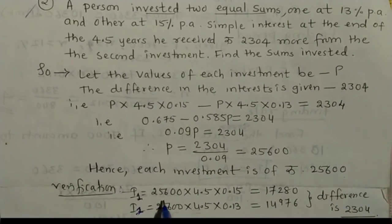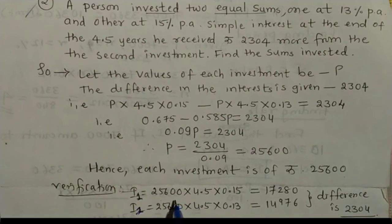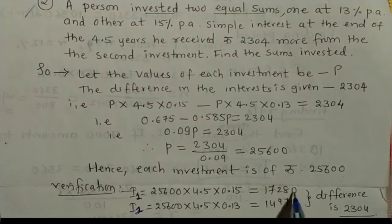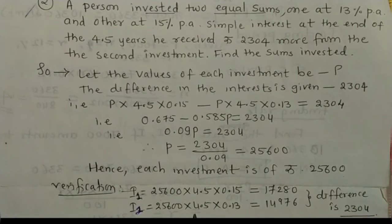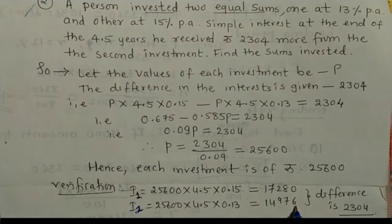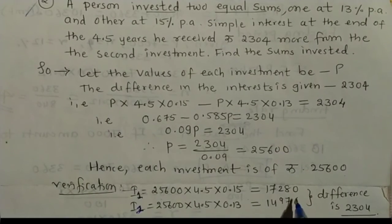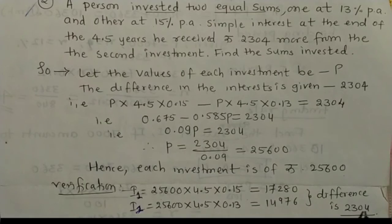After verifying, putting the P values into equation, it returns 17,280 and in SI₂ it returns 14,976. Subtracting these two, it returns 2304.